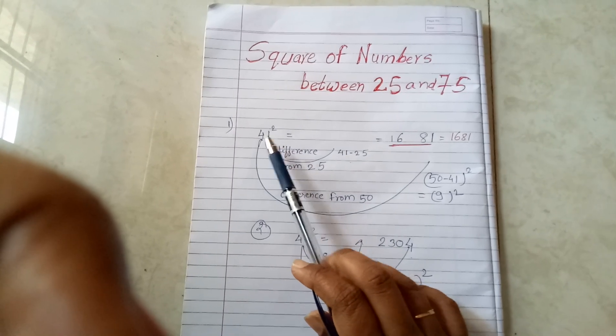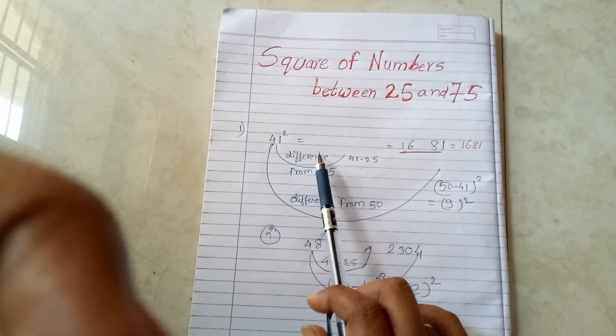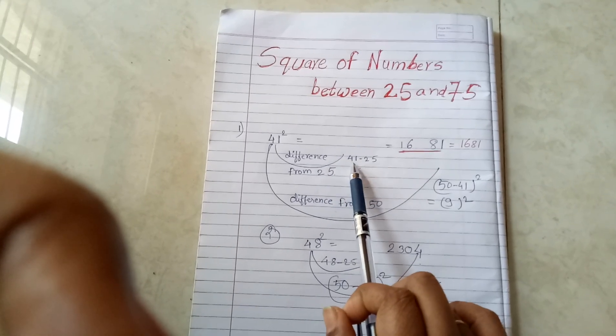Let us take one example: 41 square. First of all, the first step is you have to take the difference from 25, so 41 minus 25, you will get 16.